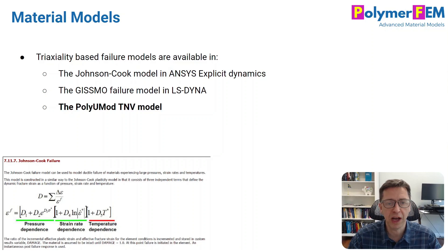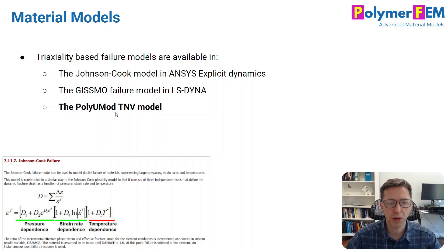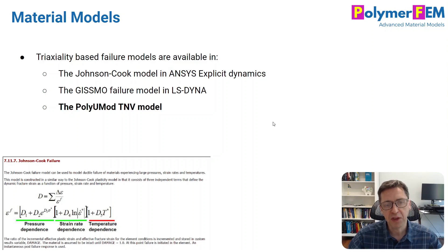What material models have the capability to predict failure using a strain that depends on stress triaxiality? There are some examples: Johnson-Cook in Ansys Explicit, and Gizmo, which is perhaps the most commonly used one available in LS-DYNA. I also want to point out that the PolyuMod TNV model — which is usually the most accurate stress-strain predicting model for thermoplastics and other polymers — also understands and can handle stress triaxiality and failure prediction. That's something I really think is useful if you want to predict failure or safety factors of thermoplastic materials.